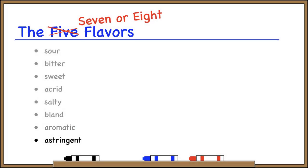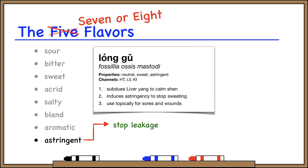Finally, we have the astringent property. This is pretty much the same as sour — we use it for herbs that don't have a sour taste but still have an action of stopping leakage. For example, Long Gu (dragon bone) is not sour in flavor, but it still has this action of stopping sweating, so that's why it's marked as astringent.